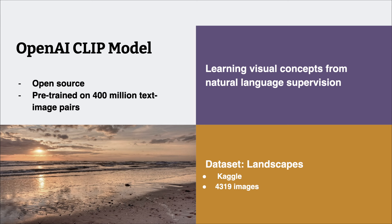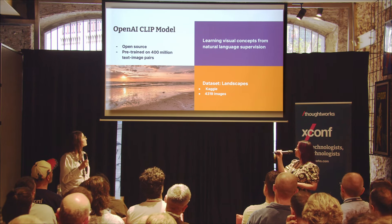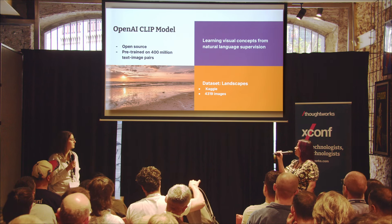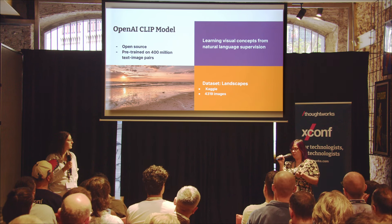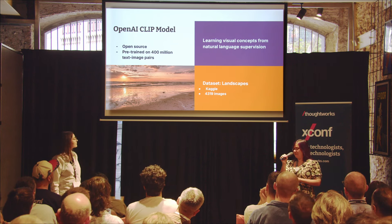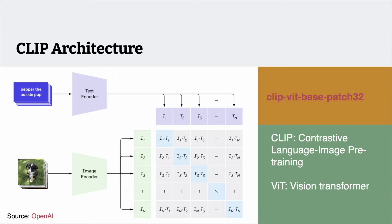Getting into the technical details, we're going to take a deeper dive into an open source model called CLIP, which comes from OpenAI. It's been pre-trained on about 400 million text-image pairs from the internet. The key takeaway is that the model learns visual concepts from natural language supervision. For the next few examples, we've used a landscape dataset from Kaggle with over 4,000 images of landscapes like beaches, hills, and mountains. The actual model is called CLIP-ViT-Base-Patch-32.